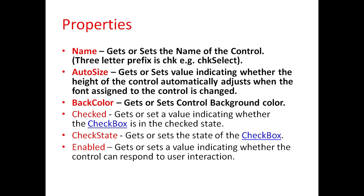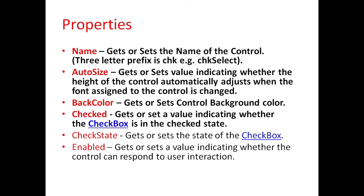BackColor property is used to get or set the control's background color. Checked property is used to get or set a value indicating whether the checkbox is in a checked state. CheckedState is used to get or set the state of the checkbox, i.e., whether it is checked — true or false.